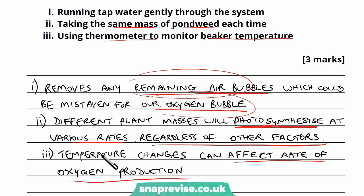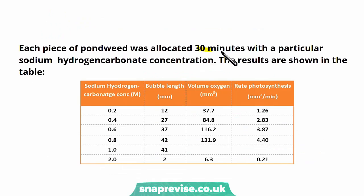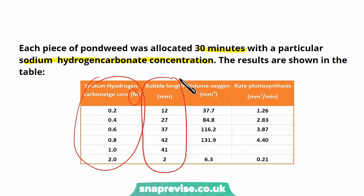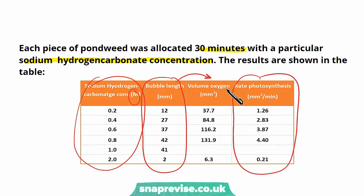Each piece of pondweed was allocated 30 minutes with a particular sodium hydrogen carbonate concentration, and the results are shown in the table. The independent variable — concentration of CO2 in the form of sodium hydrogen carbonate — is given in molar, so always look at the units. They measured the length of the bubble for each concentration, calculated the volume using the cylindrical volume formula, and then calculated the rate of photosynthesis as volume per unit time. There are a couple of gaps in the table to fill in.